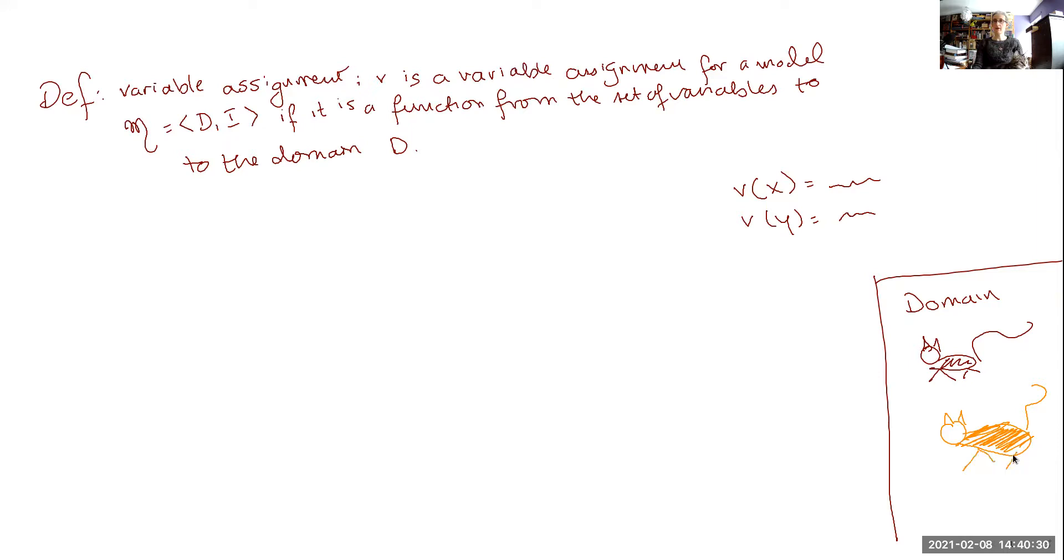So our variable assignment could be such that maybe it assigns y to the orange one, and it assigns x to the brown one. The variable assignment doesn't have to assign distinct objects to distinct variables. It could assign all of the variables the same object. Or it could assign different objects to every variable. But that's what a variable assignment is.